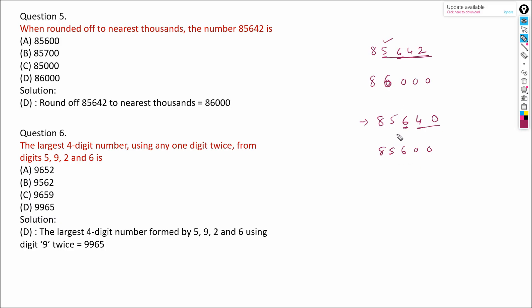So for our question of rounding to the nearest thousand, the answer is 86,000.